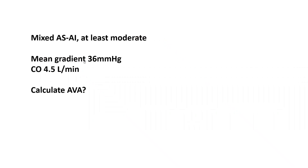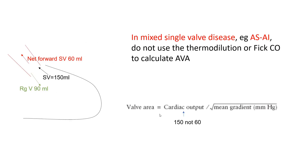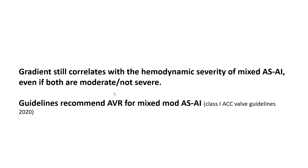You must account for this. When you have AI that is at least moderate, don't just do 4.5 divided by the square root of the gradient. Multiply the cardiac output by 2 if severe AI by echo or aortography, or by 1.5 if moderate AI. It's not an exact measurement. Guidelines give a Class I recommendation for valve surgery in symptomatic mixed moderate AS and moderate AI.